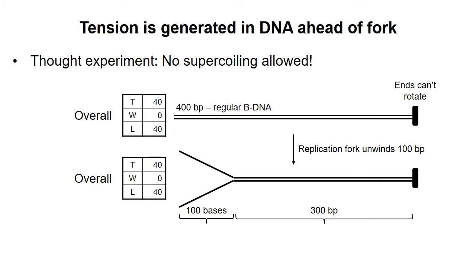Well, because we're not allowing supercoiling, the writhe must equal zero. The ends have not rotated, and no DNA strands have been broken, so linking number cannot change from the original state, and must still be 40. And because L is 40, and W is zero, the twist must also still equal 40.